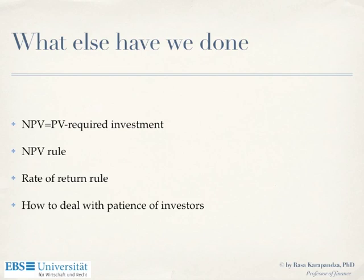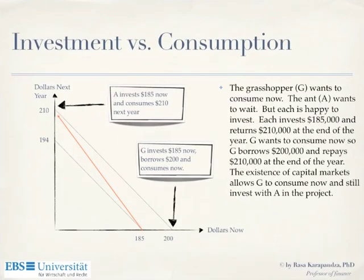Alternatively, you can use the rate of return rule: do the project if it offers more return than an alternative but similarly risky project. The concept of net present value makes the manager's job easy. If the firm is owned by two investors — one very impatient, like a 75-year-old neighbor who wants to travel, or a family saving for a child's education — it doesn't matter. If the manager increases the net present value of the company, everybody is better off, even the lady who might die next year, because she can borrow money.